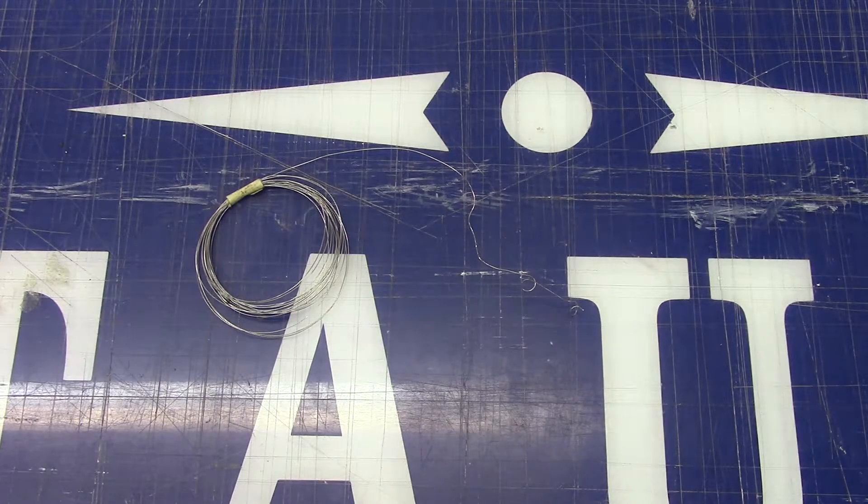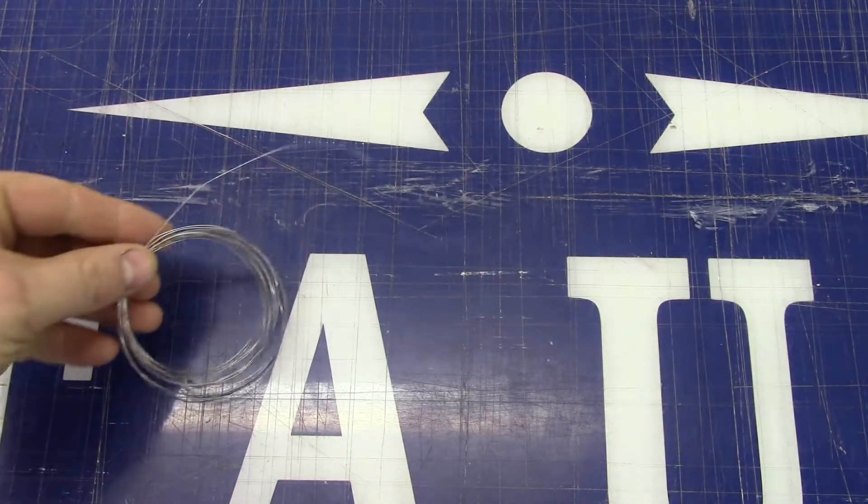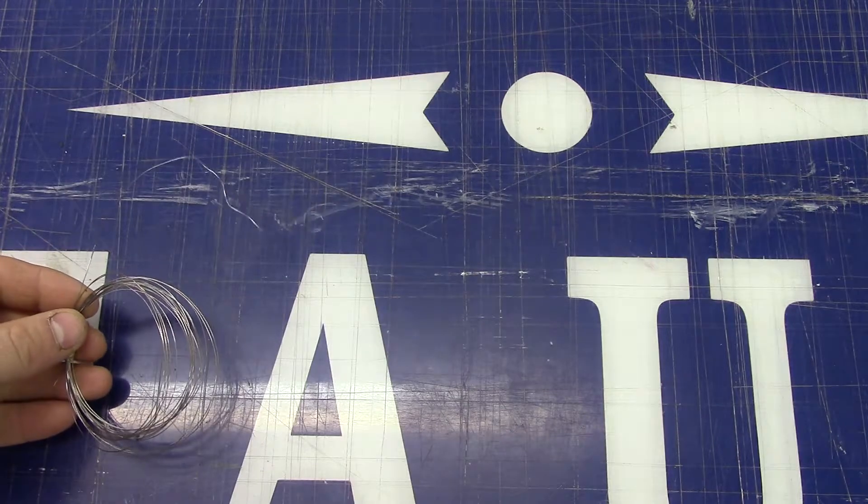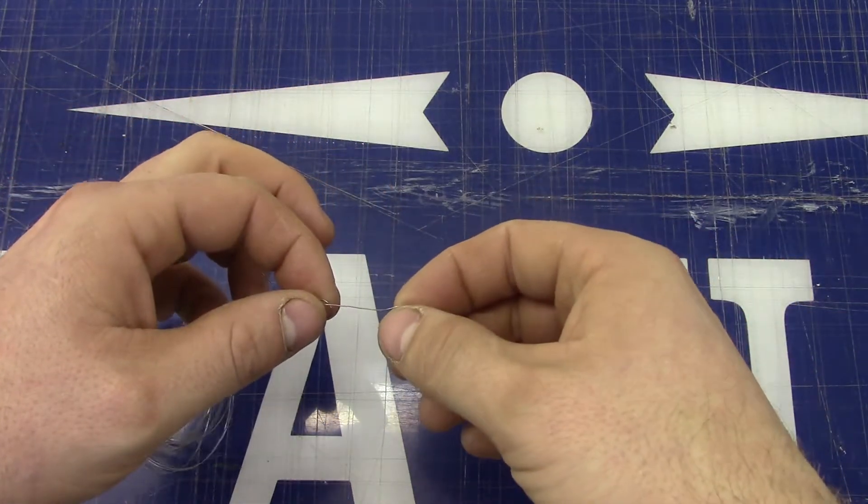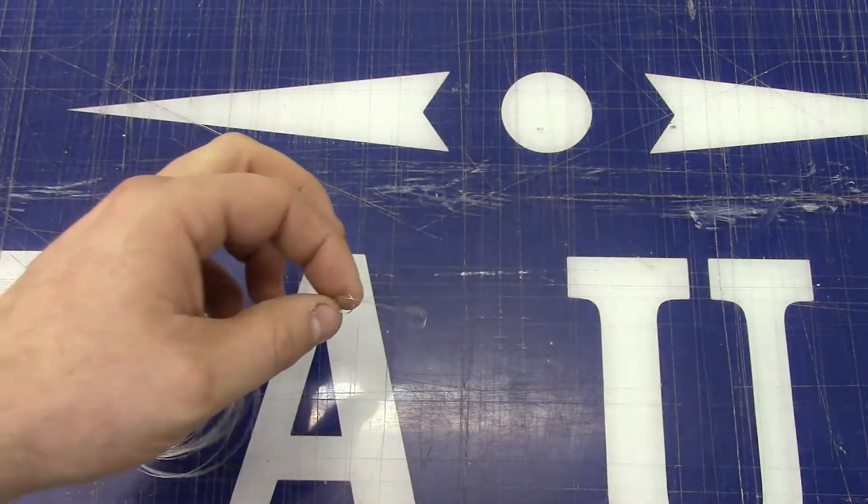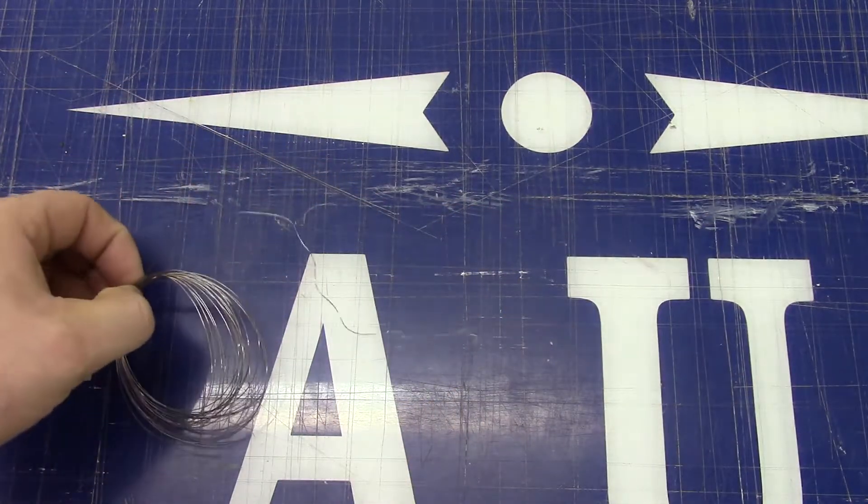And for anybody that was curious what I was using for a load on the transformer, it was just this stuff here. It's some cancel wire. It has high resistance. And that's the loop I was using between the leads there. Just that little short piece.